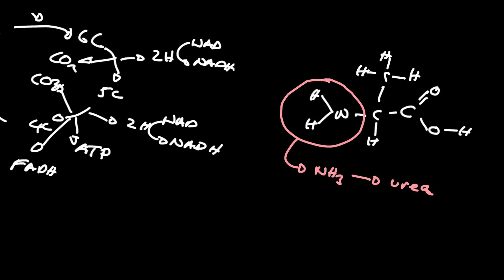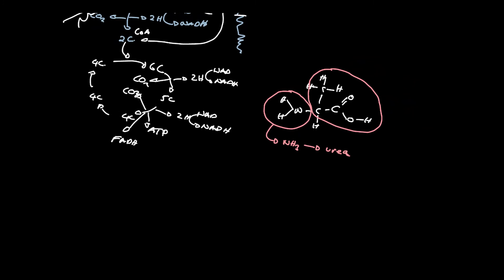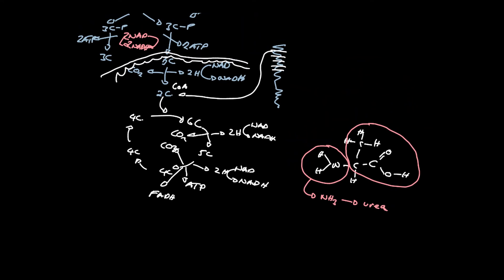Now, what we're left with depends on the nature of the R group. So you're left with this ketoacid, and depending on what the R group is, affects where that then enters the Krebs cycle. It can, depending on the R group, be turned into pyruvate. It can be turned into acetyl. It can be turned into a six carbon, a five carbon, a four carbon. It all depends on what the R group is, as to where it enters aerobic respiration.